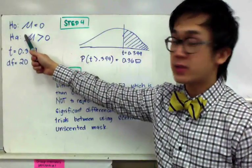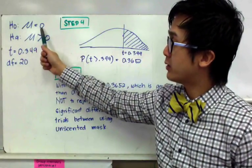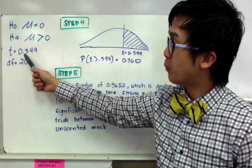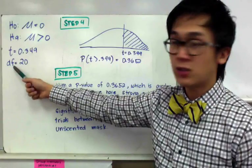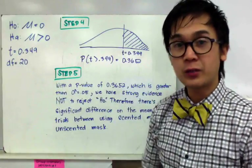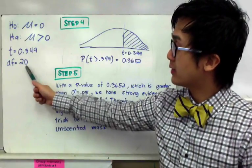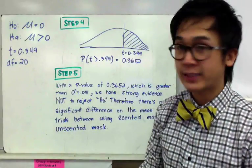The null hypothesis is μ = 0, alternative is μ > 0, with t = 0.349 and degrees of freedom of 20. The degrees of freedom is n - 1.